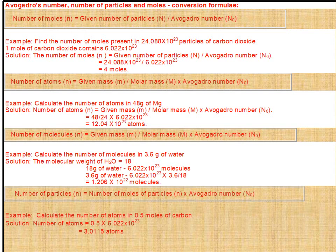Next formula: number of particles = number of moles × Avogadro's number. Example: calculate the number of atoms in 0.5 moles of carbon. Number of atoms = 0.5 × 6.022 × 10²³ = 3.011 × 10²³ atoms.